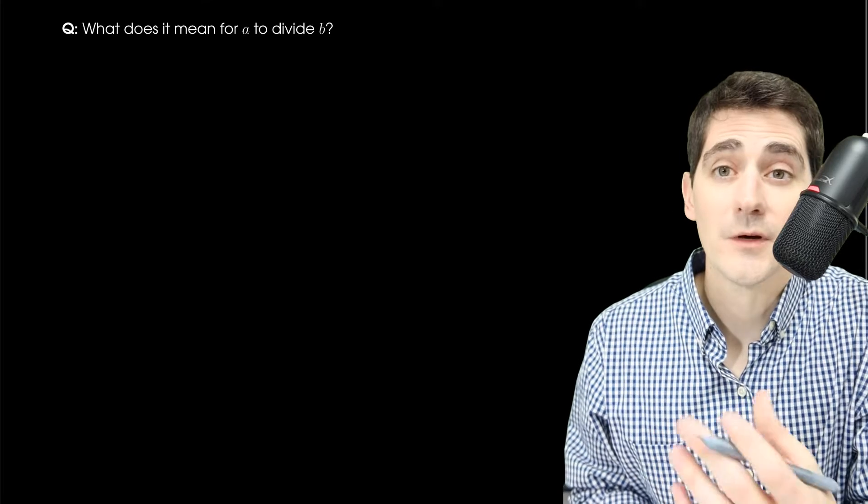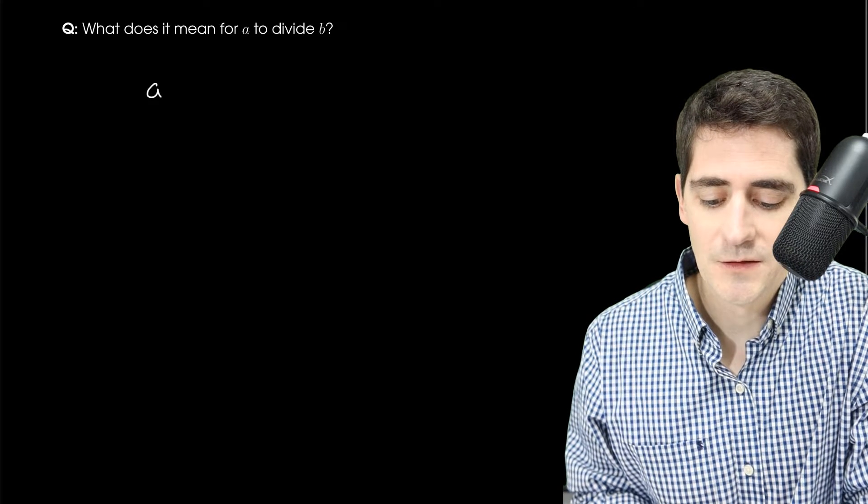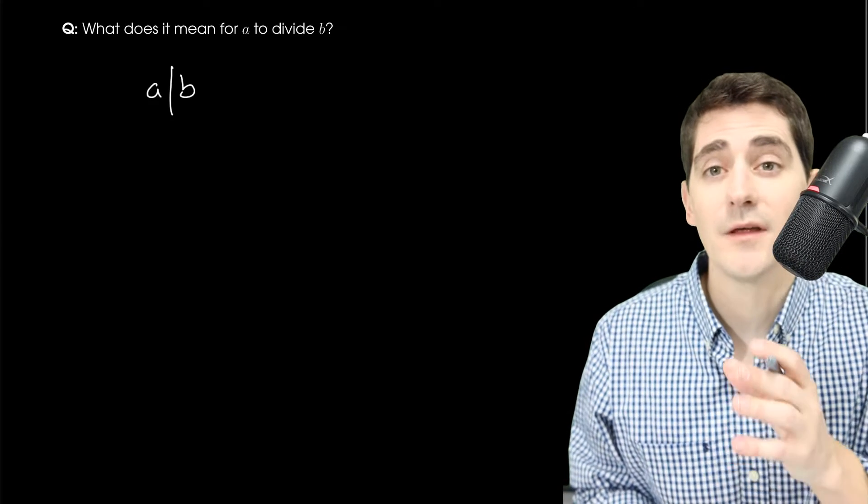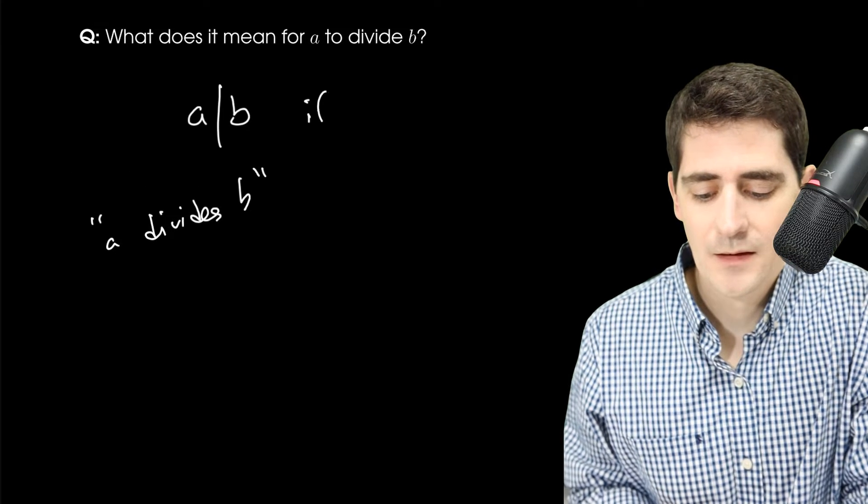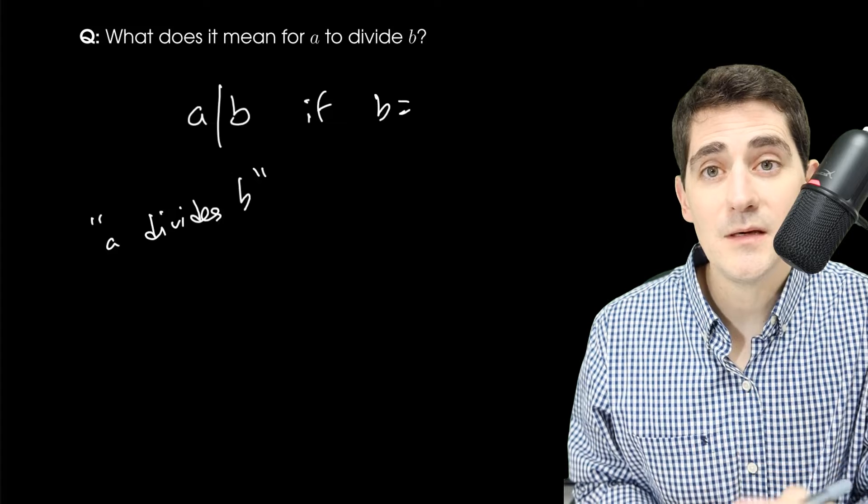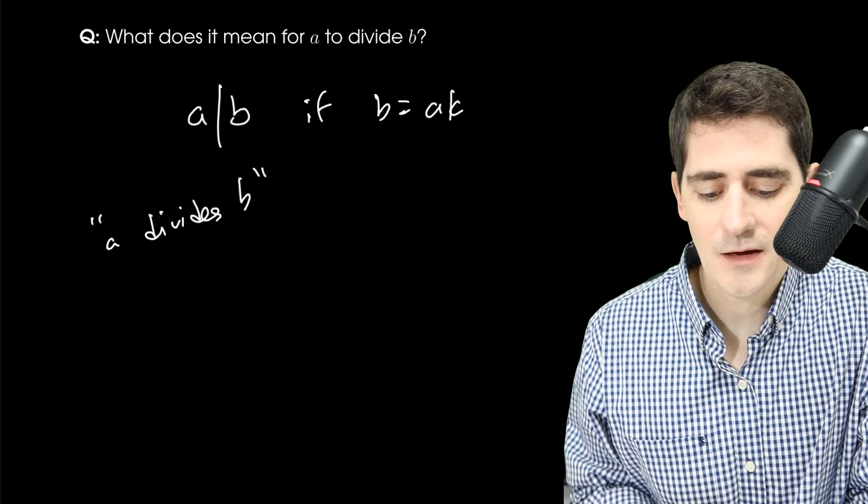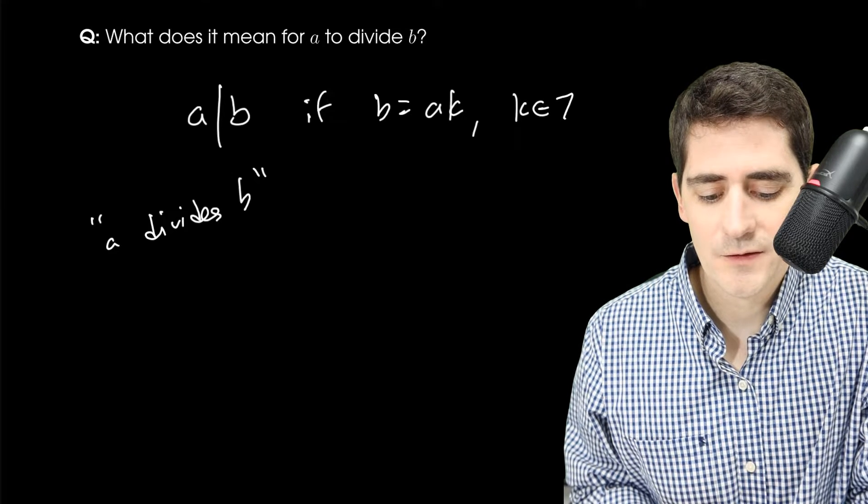So how would I say that? I can write that with this notation, A straight bar B. That reads as A divides B if I can write B as A times K, where K is some integer.